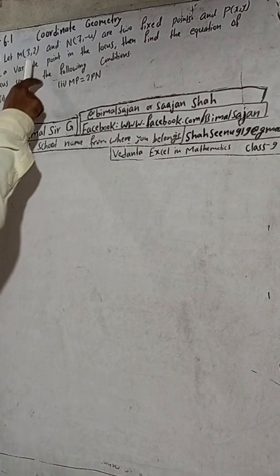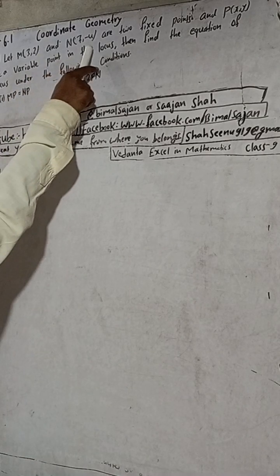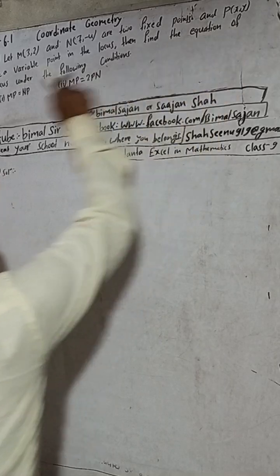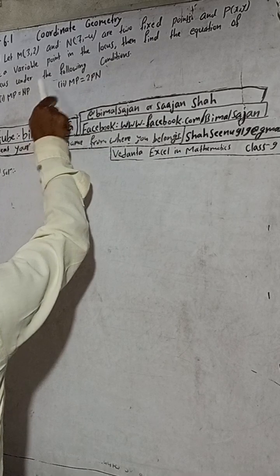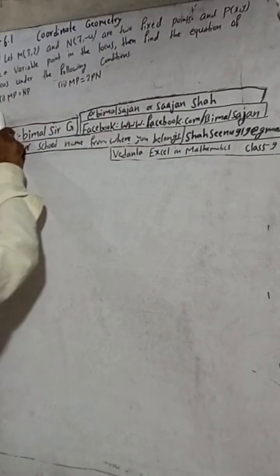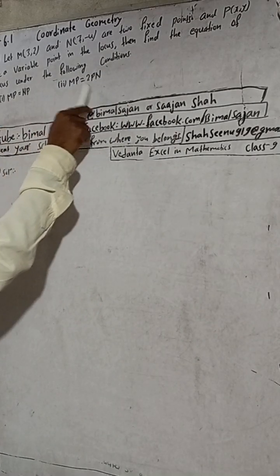Here the question is: let M(3,2) and N(7,-4) are two fixed points and P(x,y) be a variable point in the locus, then find the equation of locus under the following conditions: MP is equal to NP and MP is equal to 2PN.